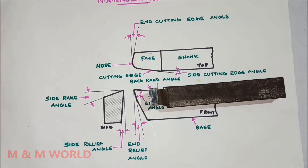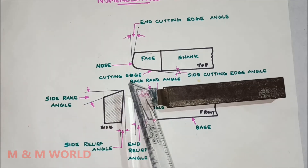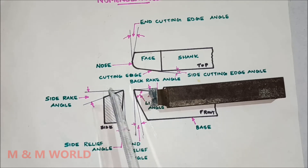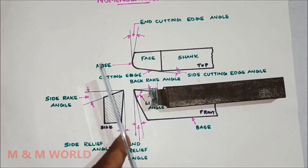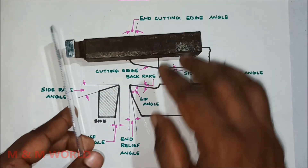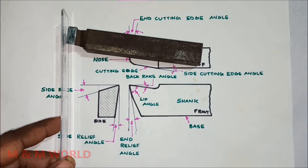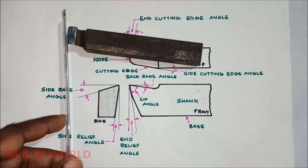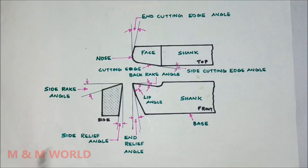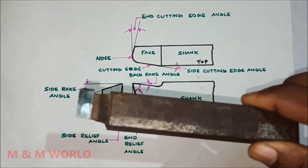The end cutting edge angle is the angle between the end cutting edge and a line perpendicular to the tool shank. It is also seen in the top view — this angle between the end cutting edge and a line perpendicular to the tool shank is the end cutting edge angle.